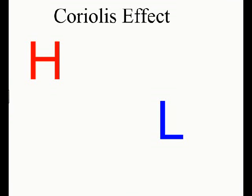The Coriolis effect is an apparent curve of the path of different objects as they move within something that's rotating. We're going to focus on the Coriolis effect in wind. Air always moves from higher pressure to lower pressure, so we'd assume air moves straight from a high pressure system to a low pressure system. But since the Earth is rotating, that wind curves to the right in the northern hemisphere, and to the left in the southern hemisphere.